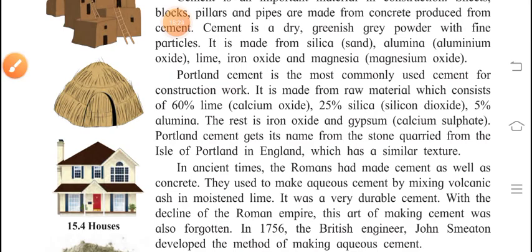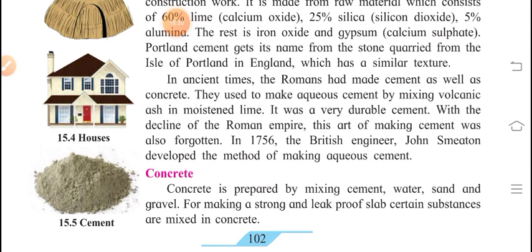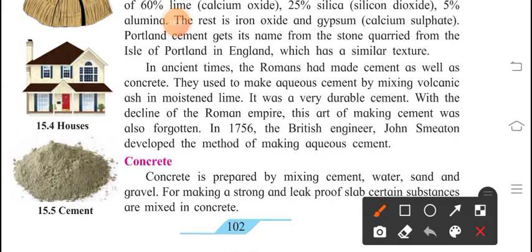Portland cement gets its name from the stone quarried from the Isle of Portland in England, which has a similar texture. In ancient times, the Romans had made cement as well as concrete. They used to make aqueous cement by mixing volcanic ash and moist slaked lime. It was a very durable cement. With the decline of the Roman Empire, this art of making cement was also forgotten. In 1756, the British engineer John Smeaton developed the method of making aqueous cement.